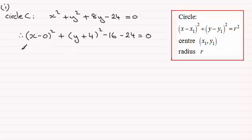So rearranging this, we'll just put (x minus 0) all squared plus (y plus 4) all squared. If I add 16 and 24 to both sides, I get 40.